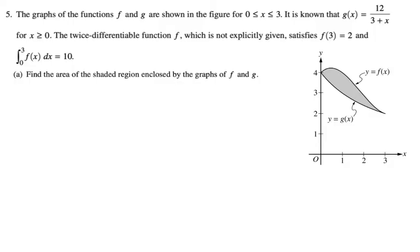The graphs of the functions f and g are shown in the figure between 0 and 3. It is known that g of x is 12 over 3 plus x, which drives me crazy. 12 over x plus 3 looks better. For x greater than or equal to 0, the twice-differentiable function f, which is not explicitly given, satisfies f of 3 is 2, and the integral from 0 to 3 of f of x dx is 10. Find the area of the shaded region enclosed by the graphs of f and g.